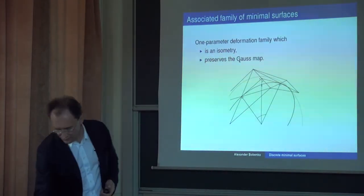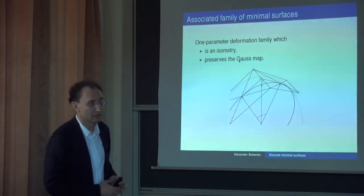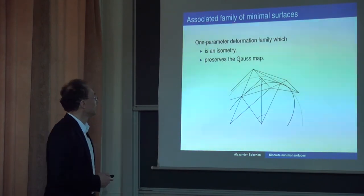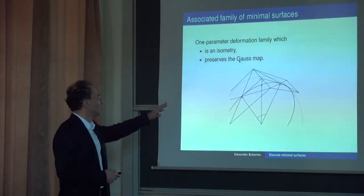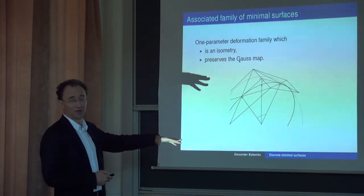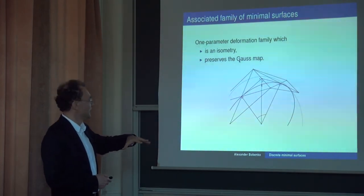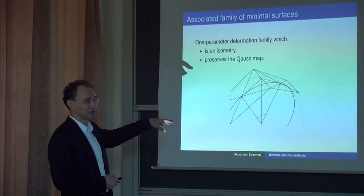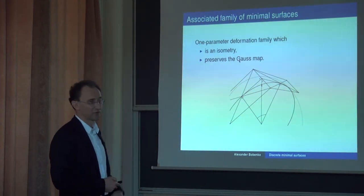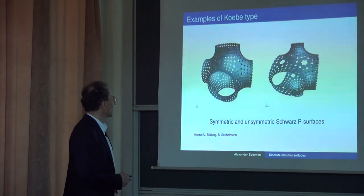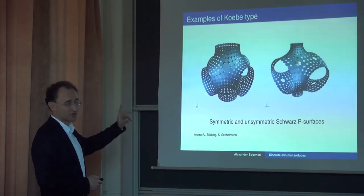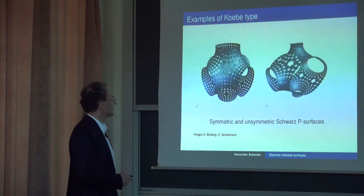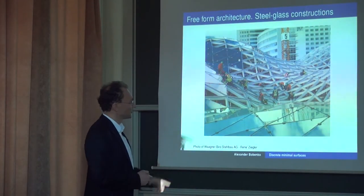I haven't explained what 'associate minimal surface' means. In the smooth case you have a one-parameter deformation family of minimal surfaces which is an isometry and preserves the Gauss map. Everything can be done in this discrete world as well, but I don't have time to explain all the details.